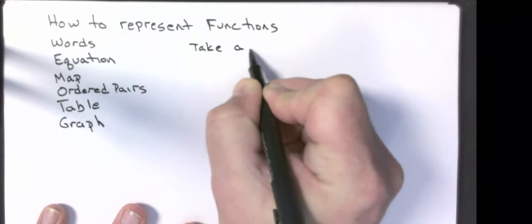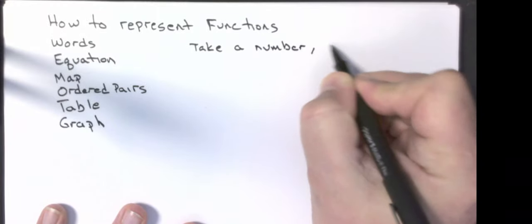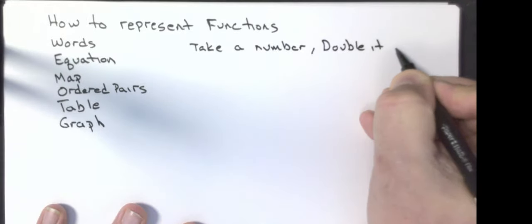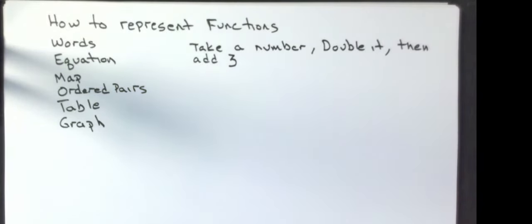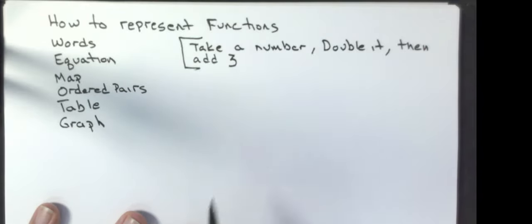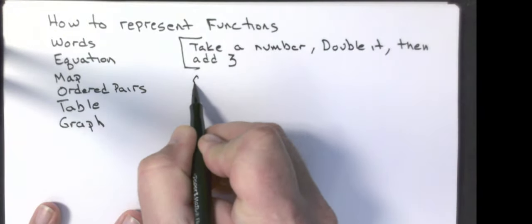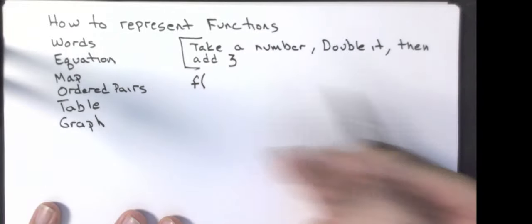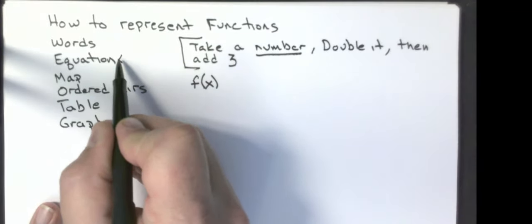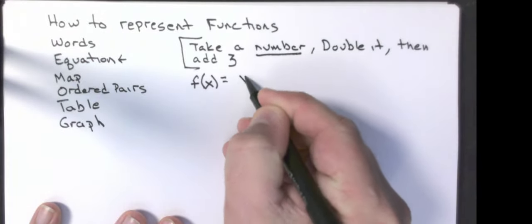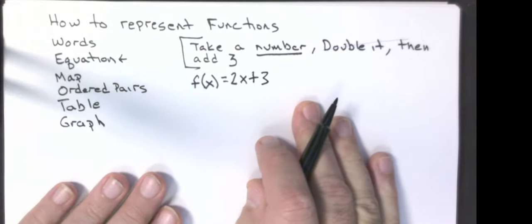The function in words is: take a number, double it, then add three. To represent this with function notation, I give the function a name — in most cases something like f, g, or h — and I say what variable I'm going to use to represent that number, in this case x. Then I write the equation: take a number (that's x), double it (multiply by 2), then add three. So the equation is f(x) = 2x + 3.